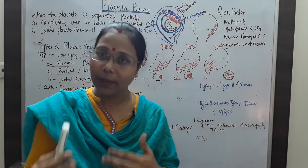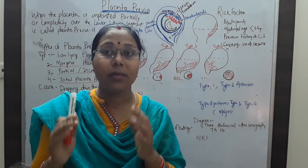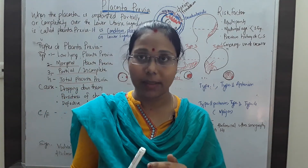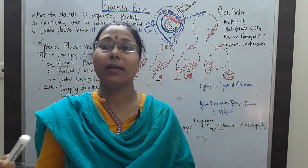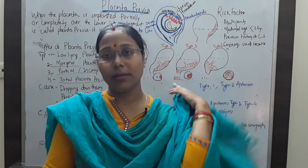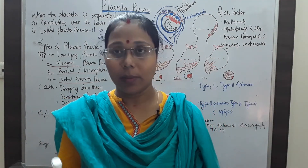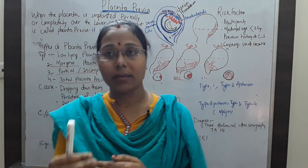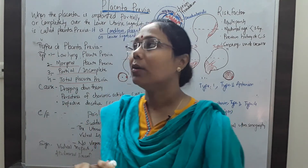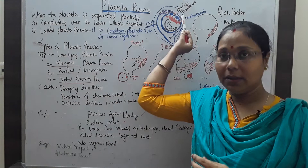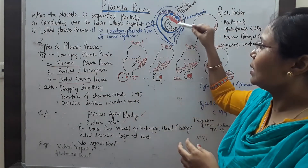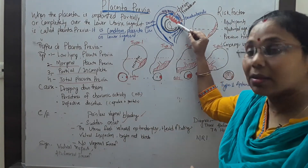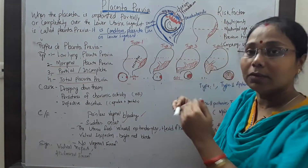Before we discuss placenta previa, we should look at what the placenta is. Placenta is a temporary organ that is developed during the time of pregnancy. It is formed when fertilization takes place — the ovum and the sperm fertilize, multiple cell divisions take place, and the embryo is implanted on the endometrium layer of the uterus. Implantation takes place at the tenth day of fertilization, and from there the formation of the placenta takes place.